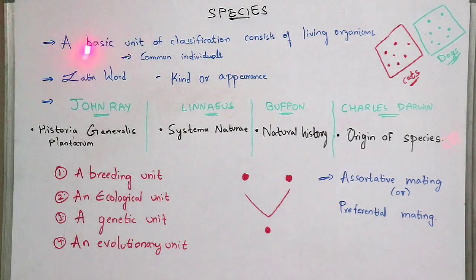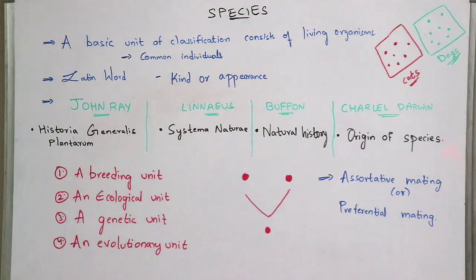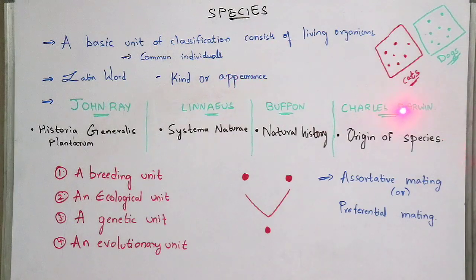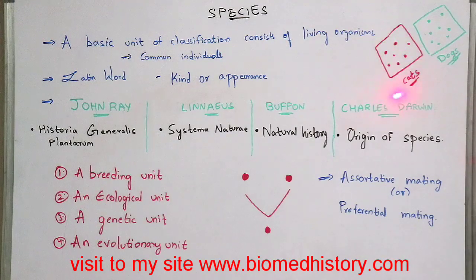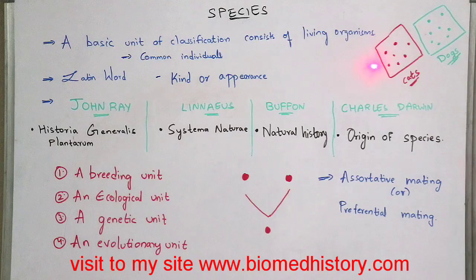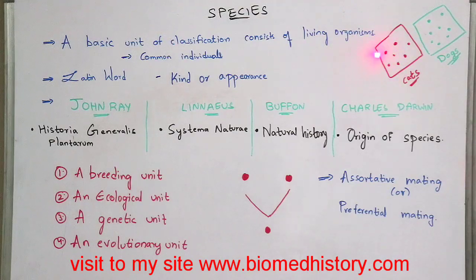Normally, what is meant by species? Species is a basic unit of classification which consists of a group of living organisms. All of the species should consist of common individuals. It consists of similar type of organisms. All of that group of living organisms which consists of the same individuals is known as species.